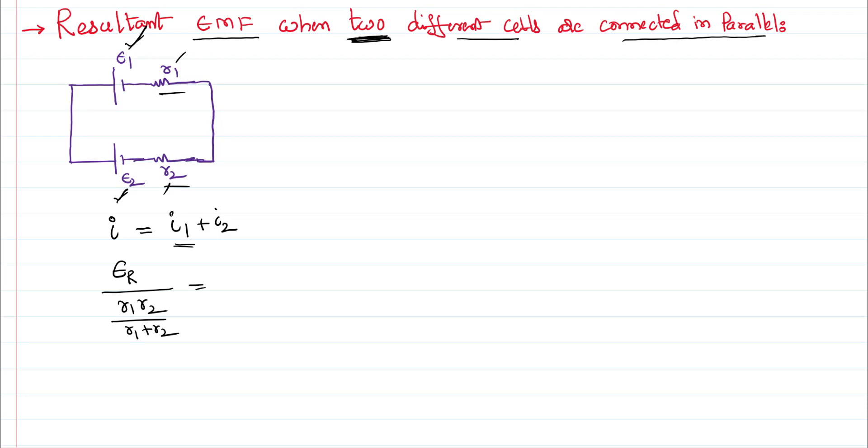Current of the first one is EMF of that one by resistance of that one. Current of the second one is using Ohm's law. So let us try to simplify this. E resultant of r1 plus r2 by r1 r2 is on the other side. LCM is r1 r2, so it becomes e1 r2.